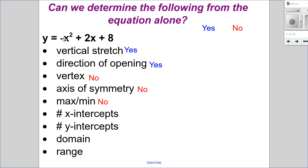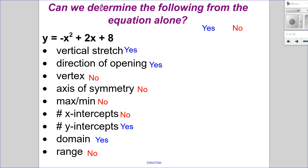I know it opens down so it has a maximum, but I don't know what it is. I don't know the number of x-intercepts, and I therefore don't know the range. A lot of things are unknown just from not knowing the vertex. I do know the number of y-intercepts, because every parabola has one y-intercept. And I know the domain, because all quadratics have the same domain: x is an element of the reals. There's a lot in this equation I don't know just because I can't see the vertex.